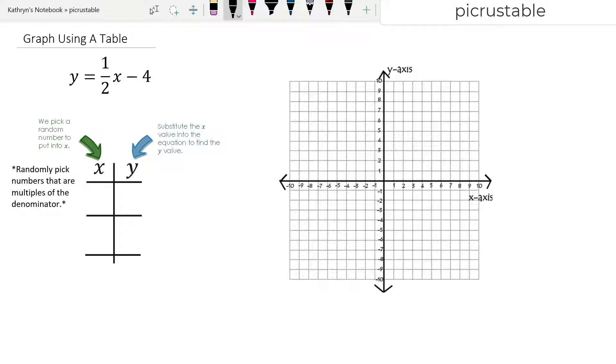Now, I've always said we pick a random number to put in for x. But the thing is, since we have a fraction, we want to randomly pick multiples of the denominator. So we want to pick multiples of 2.